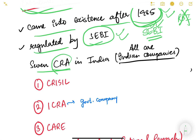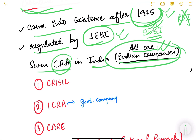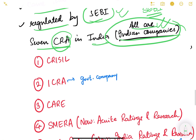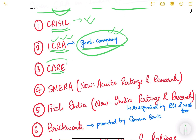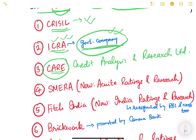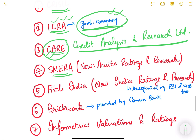At present there are seven credit rating agencies in India and all are Indian companies — none of them is a foreign company. Number one is CRISIL, which is a private Indian company. The second one is ICRA — Indian Credit Rating Agency — which is a government company. Third is CARE — Credit Analysis and Research Limited — which is a private company. Fourth is SMERA — Small and Medium Enterprise Rating Agency — whose name has now changed to Acuité Ratings and Research, also a private company.